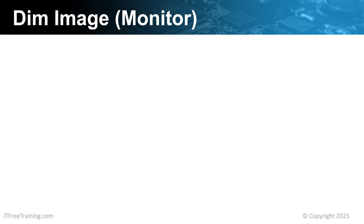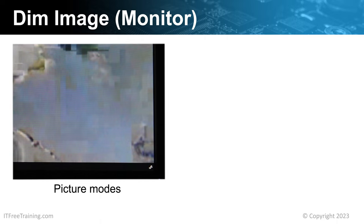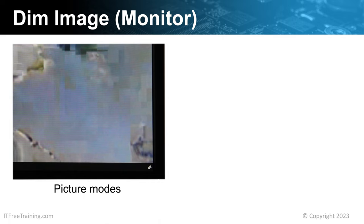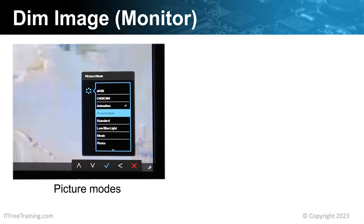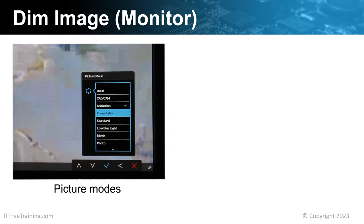The next thing to consider is what happens when the image on the monitor is dim. One of the first things I would check is what picture mode the monitor is currently using. Your monitor may refer to this as display mode, presets, or a number of other different terms. Selecting it affects how the image on the screen is displayed. For example, if the current display mode is set to animation and you change it to presentation, the screen can suddenly become noticeably brighter. The setting may also affect how the colors on the screen are displayed. If the image looks too dark or colors don't look right, check which setting the monitor is set to.